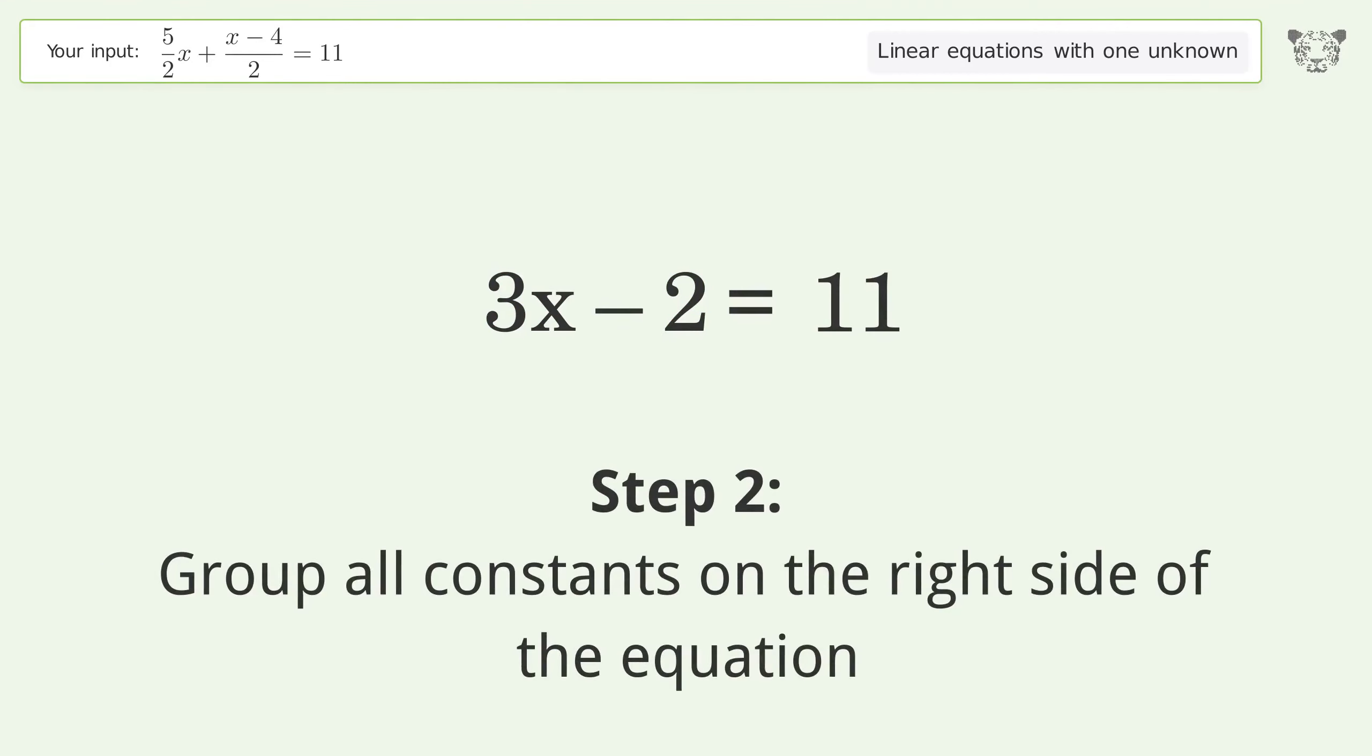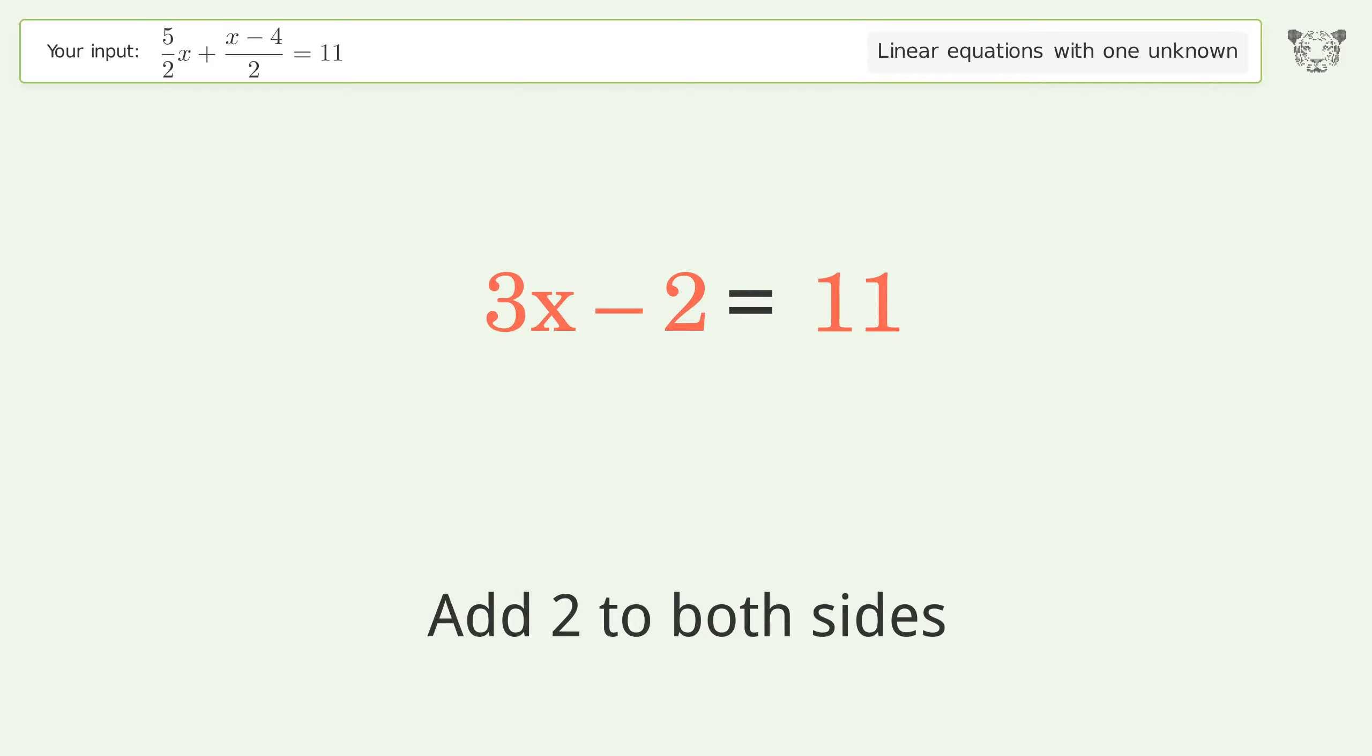Group all constants on the right side of the equation. Add 2 to both sides. Simplify the arithmetic.